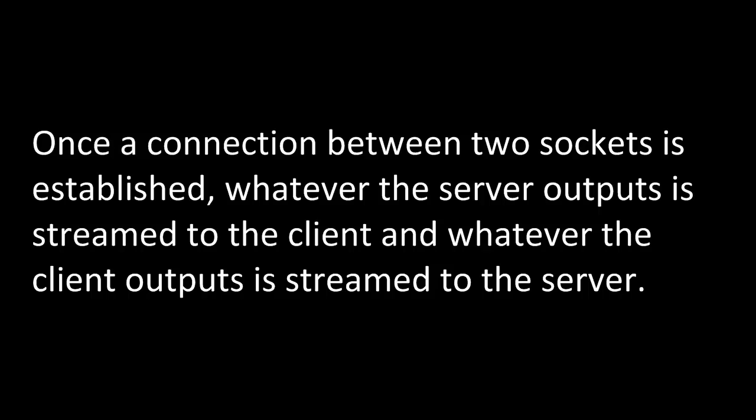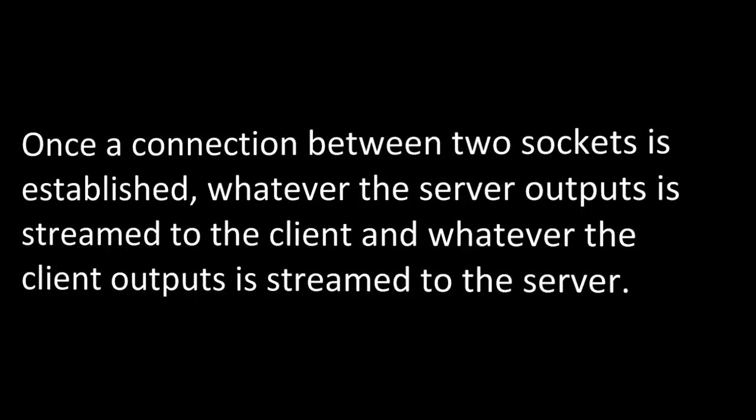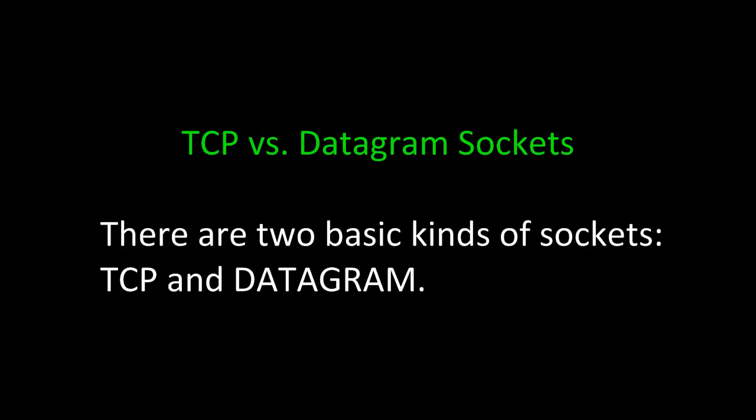Once a connection between two sockets is established, whatever the server outputs is streamed to the client and whatever the client outputs is streamed to the server. We can split socket programming up into two broad categories: TCP versus datagram sockets. That is, there are two basic kinds of sockets: transmission control protocol and user datagram protocol, or UDP.